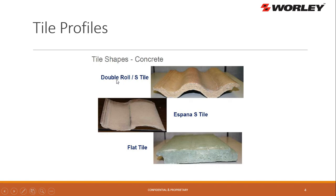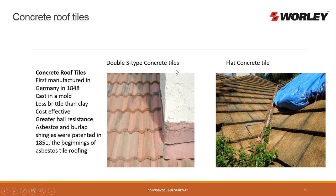Looking at tile profiles: we've got the double S, which is very common, and we've got the single S or Hispana S tile, also very common. And of course the flat tile — mostly concrete tiles are flat. The double S concrete: concrete tile was first developed in Germany around 1848, cast in a mold. They're less brittle than clay, more cost-effective, and have higher hail resistance. Asbestos and burlap shingles were patented around the same time, about 1851.